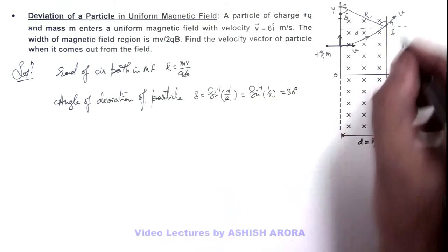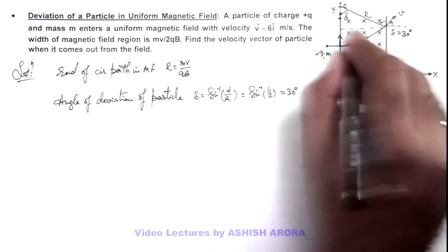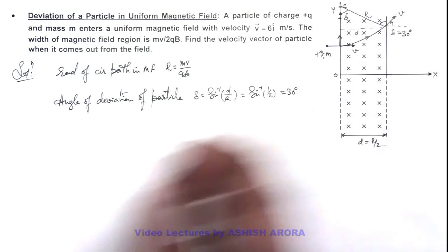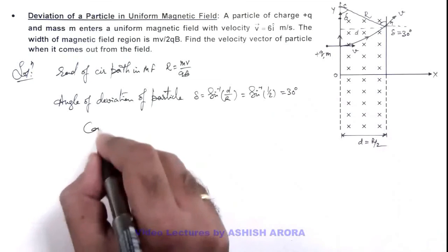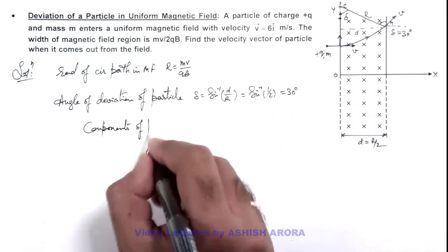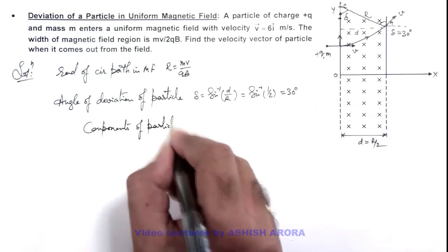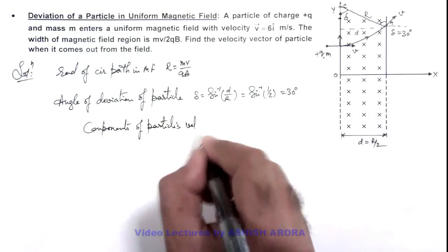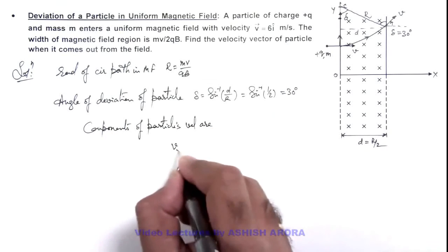So if it comes out at an angle 30 degrees, we can directly write down the components of the particle's velocity. Components of particle's velocity are: here we can write vₓ which is v cos 30 degrees.